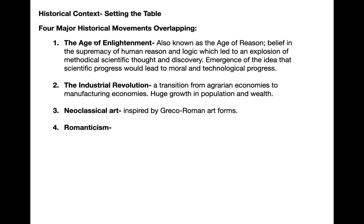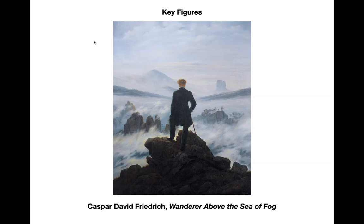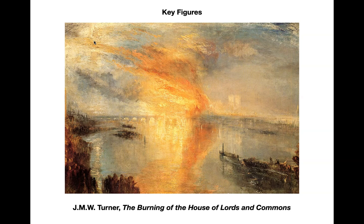Some key figures on the art side: Caspar David Friedrich with his famous painting Wanderer Above the Sea of Fog — you can see it looks very different from neoclassical art. You have a single figure in nature and it definitely has a more emotional feel. We also have Joseph Mallord William Turner, usually just referred to as Turner. This is well before Impressionism, but you can see how the Impressionist artists were very influenced by his treatment of color, light, and atmosphere. To this day, art historians and living artists look back at his powerful grasp of light and atmosphere.